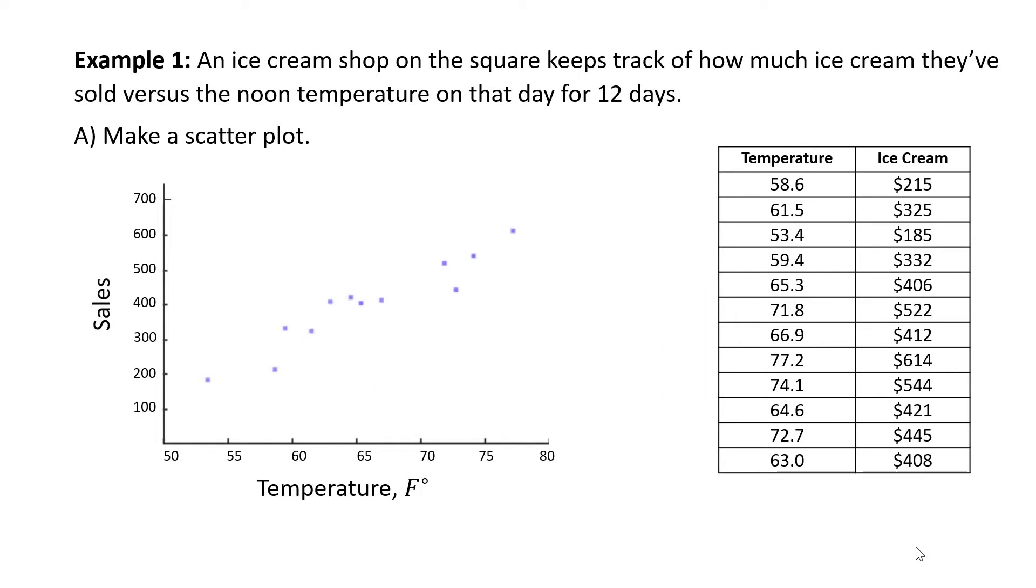Now let's plot the points. We'll mark them all. Let's observe that the lowest temperature, 53.4 degrees, corresponds to $185. Here's the point. And the highest temperature corresponds to 77.2 degrees, and the sales corresponds to $614. Here's the point. We see a scatter plot.